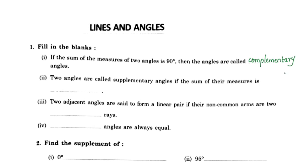Next, two angles are called supplementary angles if the sum of their measures is 180 degrees. So, 90 degrees are called complementary and 180 degrees are called supplementary.